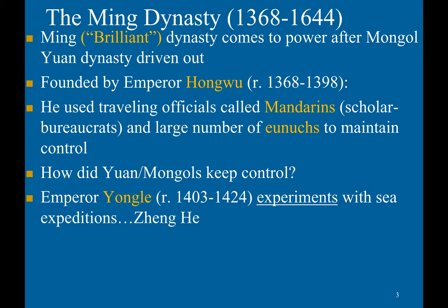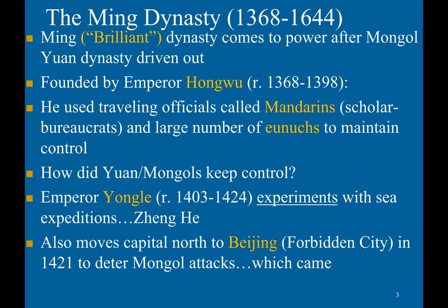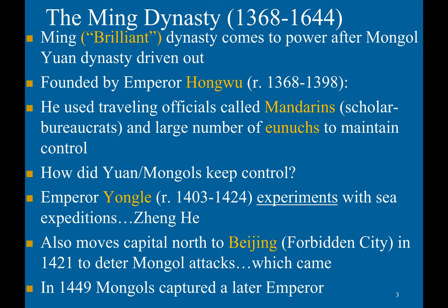Emperor Yongle experiments with sea expeditions — if you remember the Zheng He expeditions. He also moves the capital north to Beijing, where he builds the Forbidden City in 1421 to deter Mongol attacks, which came.